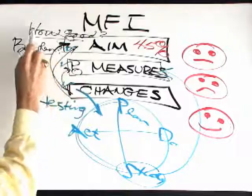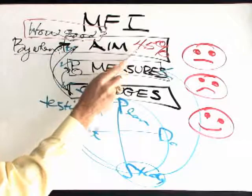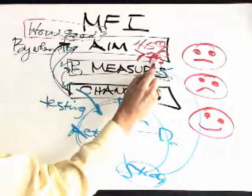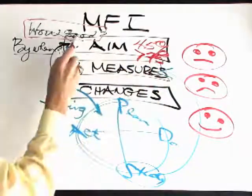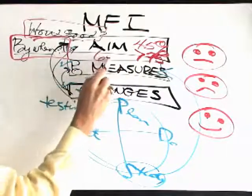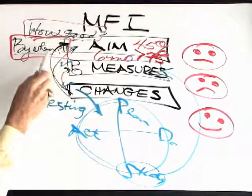Well, we might say if we're developing our aim statement, how good do we want to be? We want to be at higher than 75%. How good and by when? We're going to do that over the next six months. So anytime we write an aim statement, we want to know how good and by when.